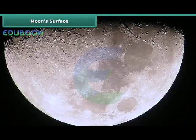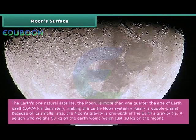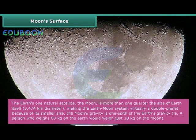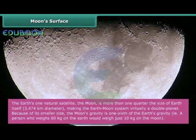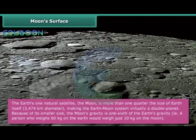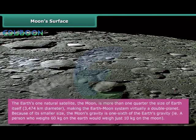Moon's surface. The Earth's one natural satellite, the Moon, is more than one quarter the size of Earth itself. 3,474 km diameter making the Earth-Moon system virtually a double planet. Because of its smaller size, the Moon's gravity is one-sixth of the Earth's gravity. That is, a person who weighs 60 kg on the Earth would weigh just 10 kg on the Moon.